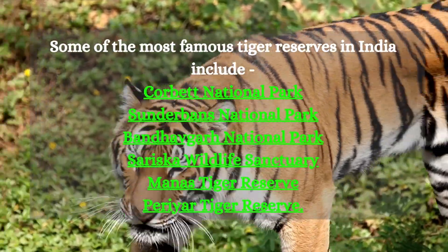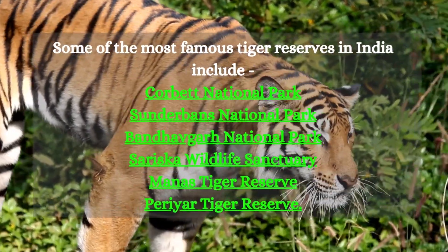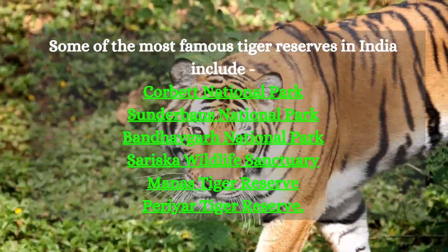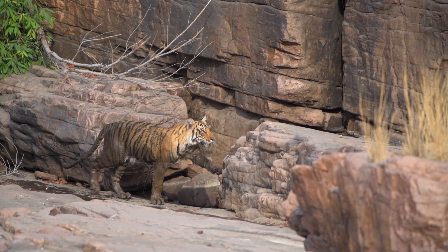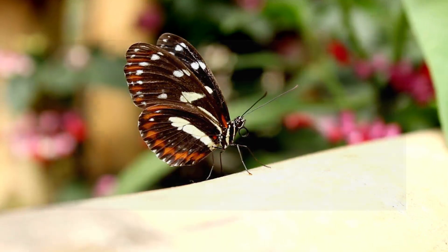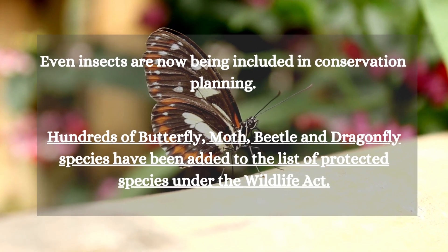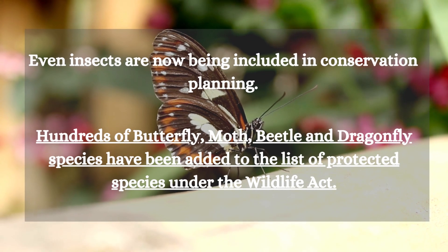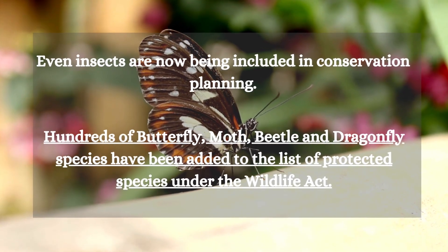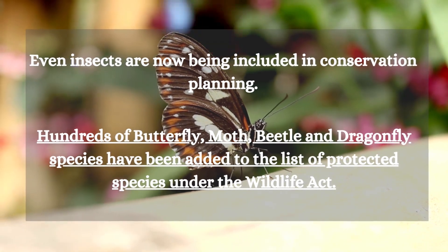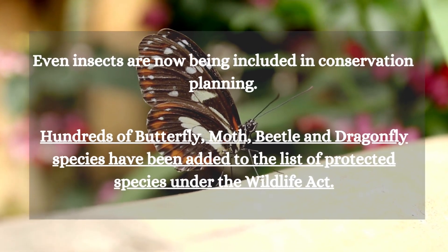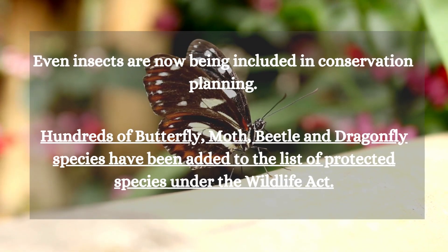It is essential to conserve tigers and their habitats for the survival of the species and overall biodiversity. Conservation efforts are now centered on biodiversity as a whole, with an emphasis on various conservation measures. Even insects are now being included in conservation planning — hundreds of butterflies, moths, beetles, and dragonfly species have been added to the list of protected species under the Wildlife Act. Additionally, in 1991, six plant species were added to the list for the first time.